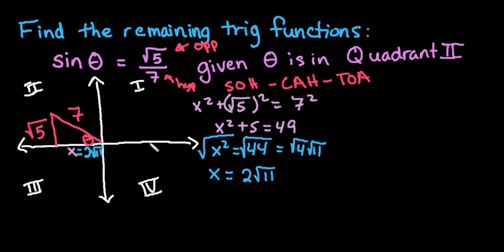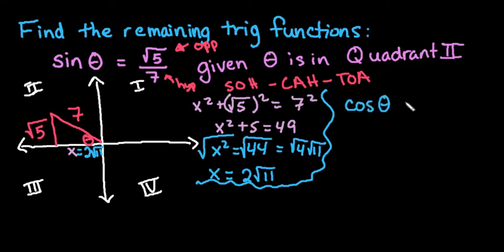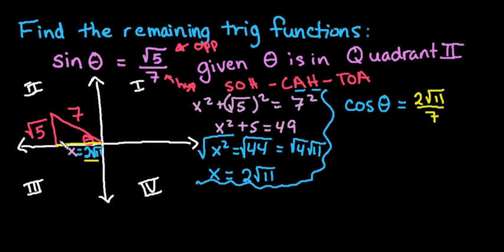Now we have all the information needed to find the 5 remaining trig functions. Starting with cosine and tangent since we already have sine. Cosine is the adjacent over the hypotenuse, so we get 2 square root of 11 over 7. There are no radicals in the denominator, so nothing else is needed. However, because cosine is in quadrant 2, it must be negative — so cosine of theta is negative 2 square root of 11 over 7.